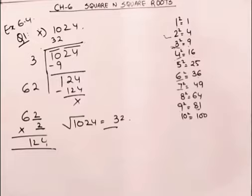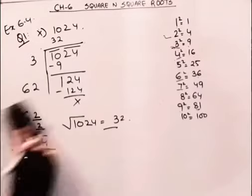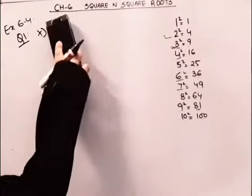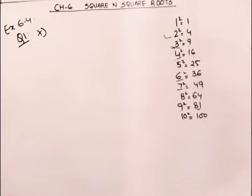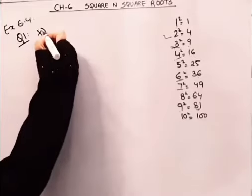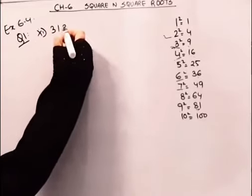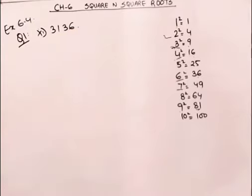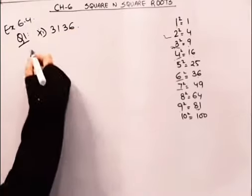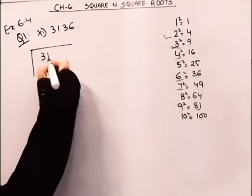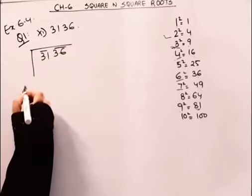So this is the square root. Here we complete the 10th part of this question. Now we move on to the 11th part. 11 is 3136. 2, 2, 5 langa denge.